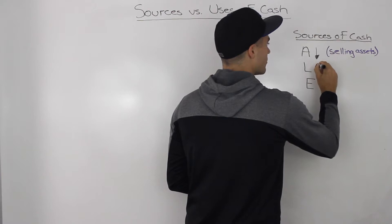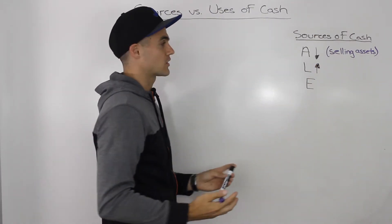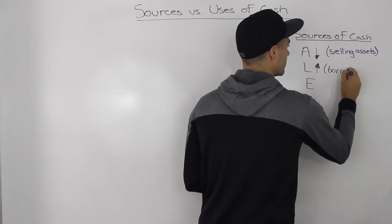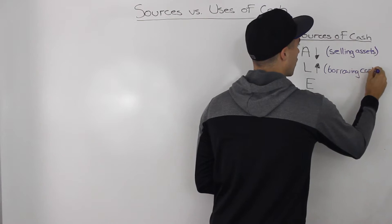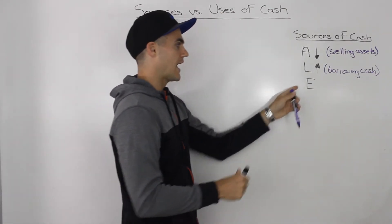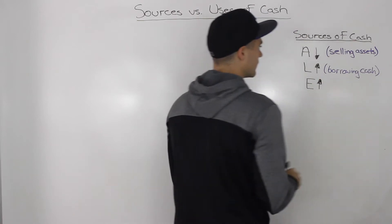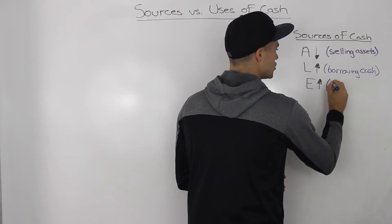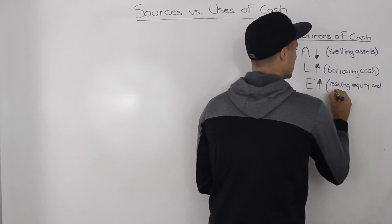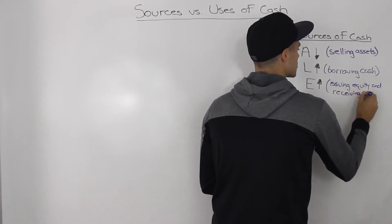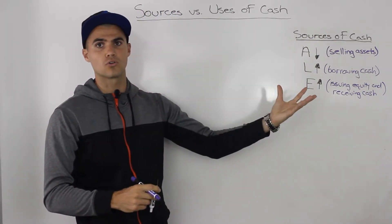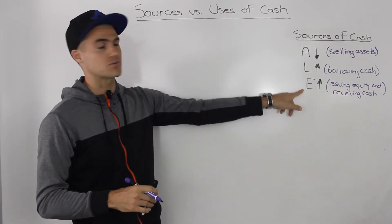When liabilities go up, that is a source of cash for a company. Because when liabilities are going up, your debt is going up — it means that you are borrowing money, meaning that you are getting money. So it is a source of cash. And then equity: when equity goes up, what's happening is you are issuing more shares, so you're issuing equity and receiving cash from shareholders. Hence, when equity goes up, that is a source of cash.